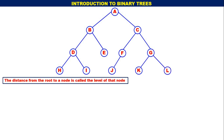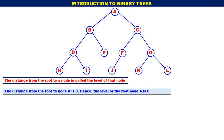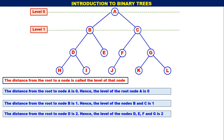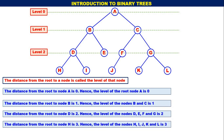The distance from root to a node is called the level of that node. Distance from root to node A is 0, therefore the level of root node A is 0. Distance from root to node B is 1; hence the level of nodes B and C is 1. The distance from root to node D is 2, so nodes D, E, F, and G are all at level 2. The distance from root to node H is 3; hence the level of nodes H, I, J, K, and L is 3.